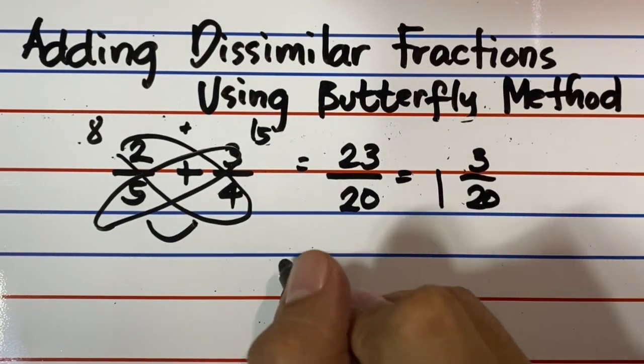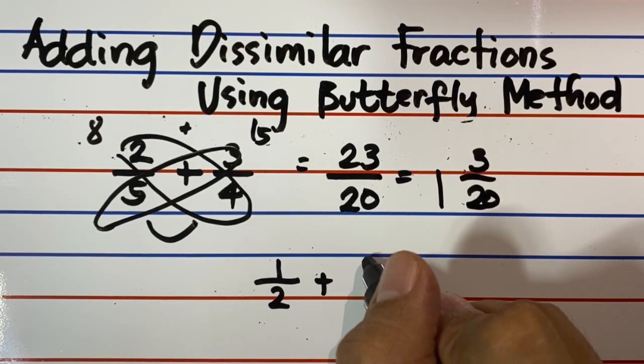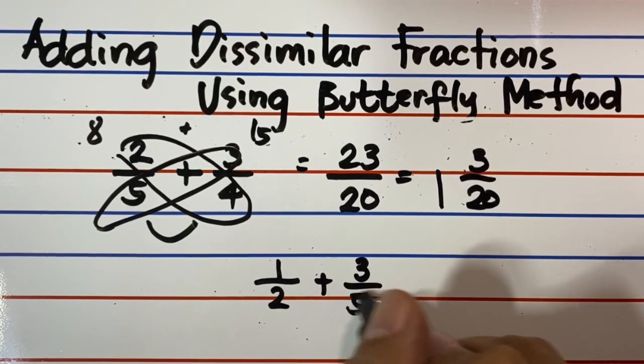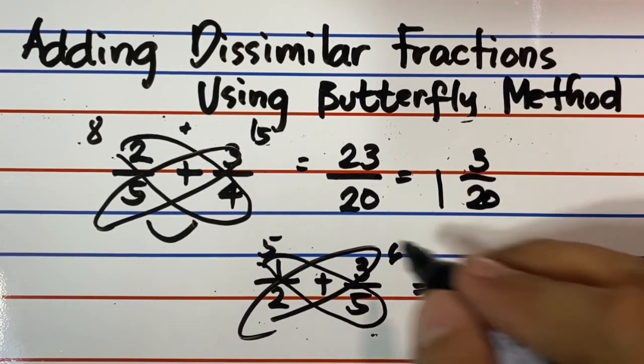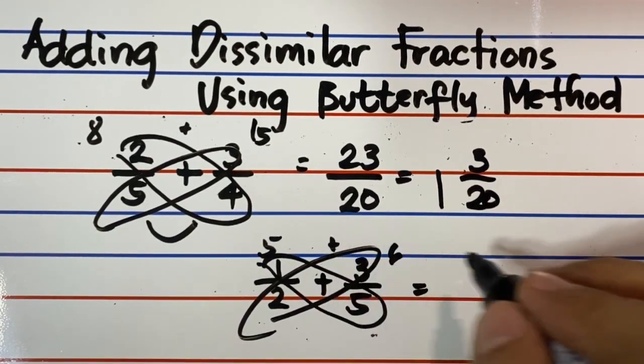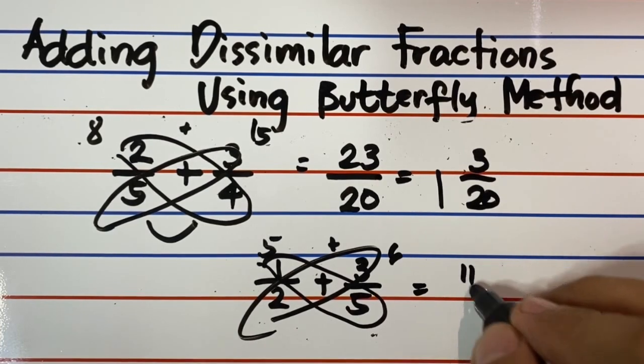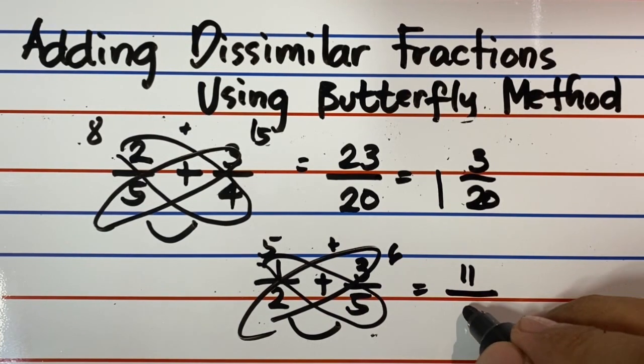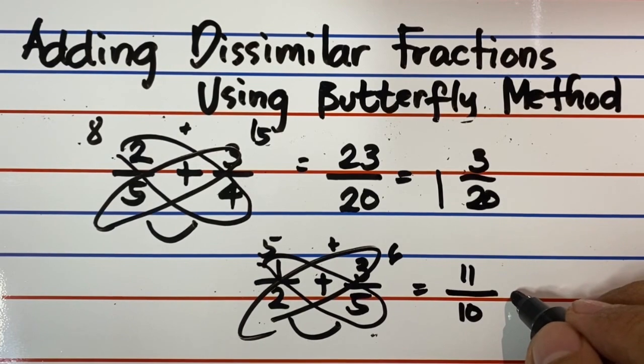Another example. Encircle 1 crossing over 5. 1 times 5 equals 5. Encircle 2 crossing over 3. 2 times 3 equals 6. Then add 5 and 6 as your numerator. It becomes 11. Multiply the two denominators 2 and 5 to get 10 as your denominator. The answer is 11 over 10.